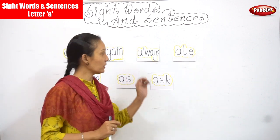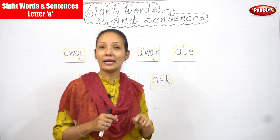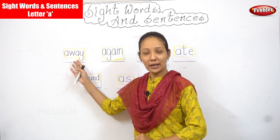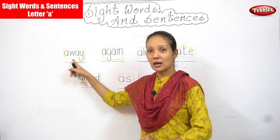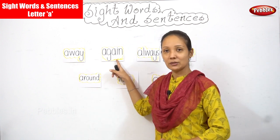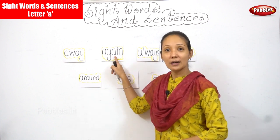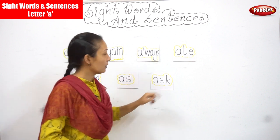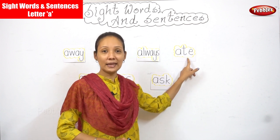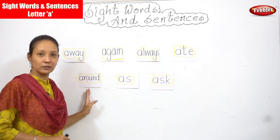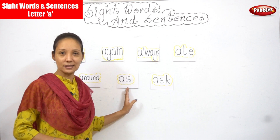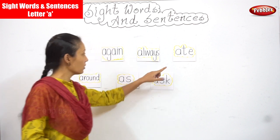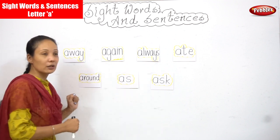I already have the words flipped up for you. We've been learning these sight words, and now once again, let's go through them. What is this word? Away. Next word — always. Eight. Around. As. Ask. Okay, so now you're a bit familiar with these words.